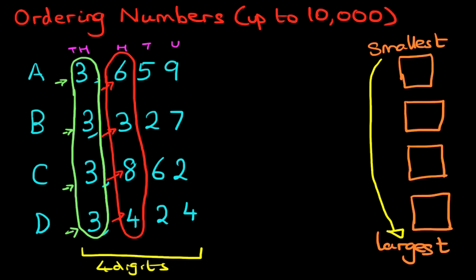So let's do this. I'm just going to rewrite the hundreds column over here just to make it easier for us to work through. A has got six, B has got three, C has got eight, and D has got four. You don't need to do this extra column, it's just for us to work through. So this is the hundreds column: six, three, eight, four. Forget about all the other digits.